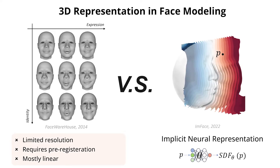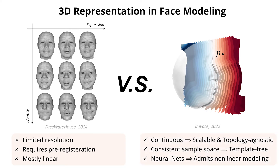Recently, a new technique called neural representation, or coordinate-based representation, has emerged as a powerful alternative in data representation. It leverages neural networks to learn the continuous function from a coordinate to a signal. For 3D shapes, networks learn the implicit function such as signed distance function or occupancy function, which implicitly define shapes in 3D space. Compared to explicit representation, implicit neural representation can handle arbitrary resolution and topology, and is template-free and nonlinearity-friendly, showing an intriguing prospect in face modeling.